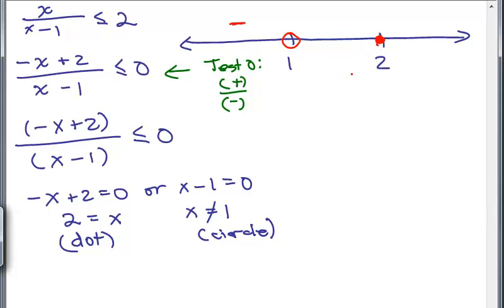Now let's pick a number in between 1 and 2. Let's test 1 and a half, for instance. So I'm going to put in 1 and a half for x. So I have negative 1 and a half plus 2. That's still a positive number. And in the denominator, I have 1 and a half minus 1. That's positive as well. And a positive divided by a positive is positive.